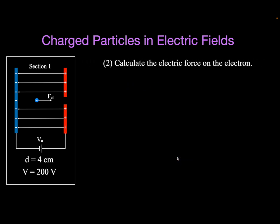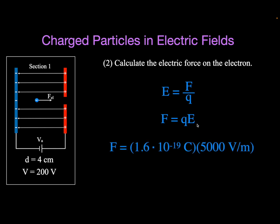Now we're going to calculate the force. The force comes from the definition of the electric field: force per unit of charge, in newtons per coulomb. We rearrange that for the force: F equals q times E, charge times electric field strength. The charge is 1.6 times 10 to the minus 19 coulombs. The electric field is 5000 volts per meter. We get 8.0 times 10 to the minus 16 newtons — that's the constant force that electron feels between those plates.